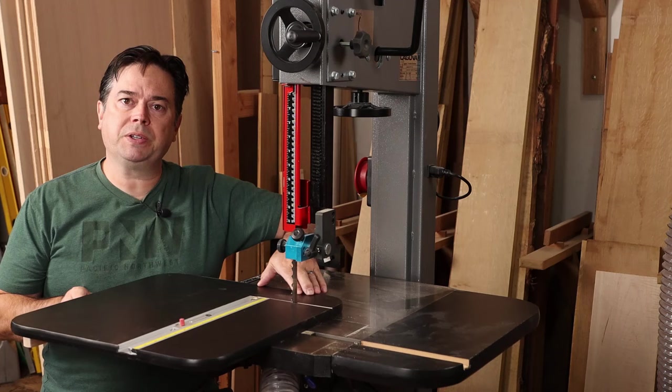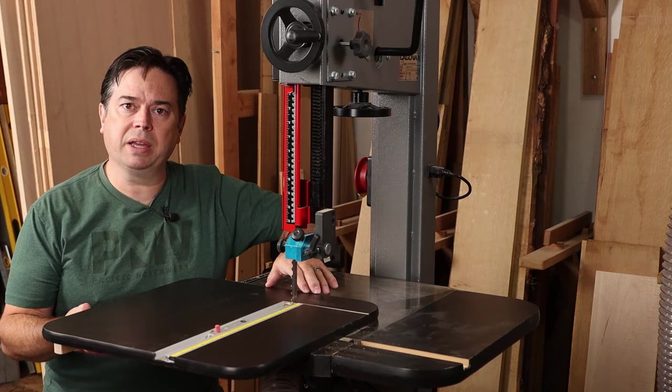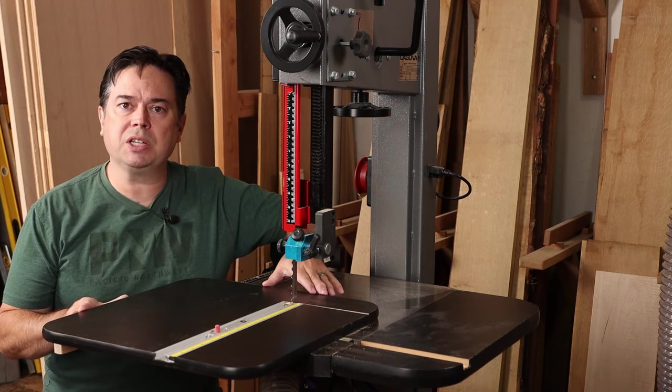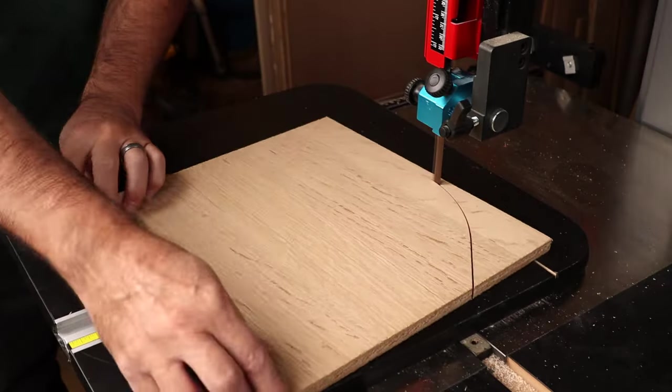Those two features, the magnets and the metal bracket, really hold things steady in place so you don't have to worry about the jig shifting on you as you're cutting the circle.